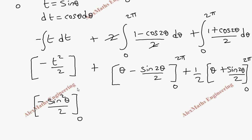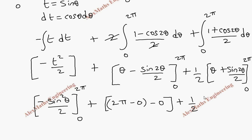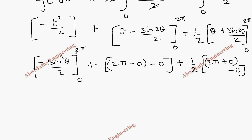Substituting the limits: for the sin²θ integral, the upper limit gives 2π and sin(4π) equals 0, and the lower limit gives 0, so this part equals 2π times (1/2) giving π. For the cos²θ integral, the upper limit gives 2π plus 0 and the lower limit is 0, giving another π. The first substituted term evaluates to 0. So the LHS equals 3π.